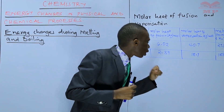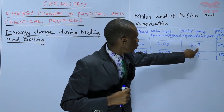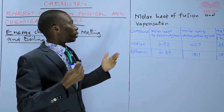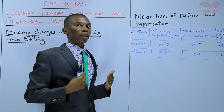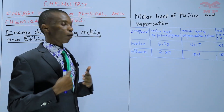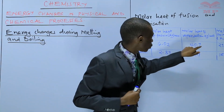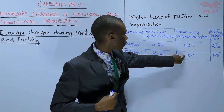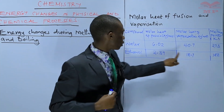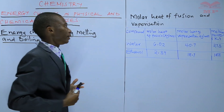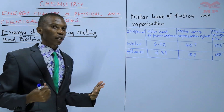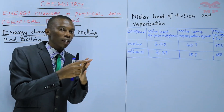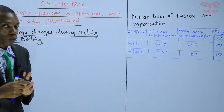For the molar heat of vaporization, in water it is 40.7 and in ethanol it is 18.7 kilojoules per mole. Again, the higher the molar heat of vaporization, the higher the melting point of that substance. Water has a molar heat of vaporization of 40.7 and a melting point of 273 Kelvin, while ethanol has 18.7 and a melting point of 188 Kelvin — confirming that the higher the molar heat of vaporization, the higher the melting point.